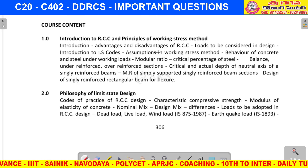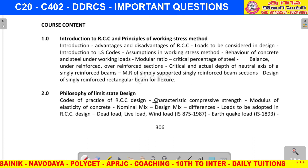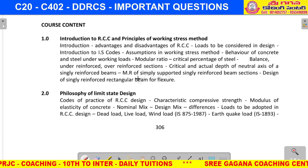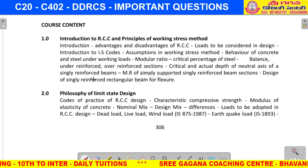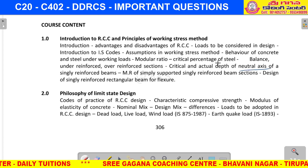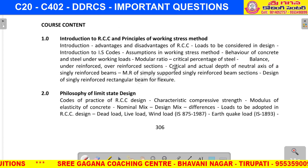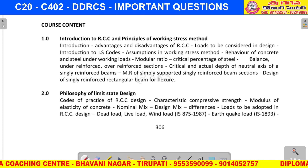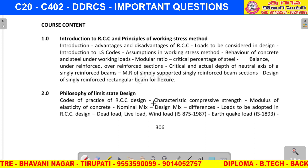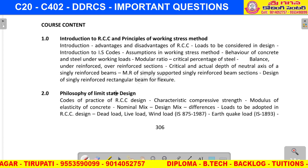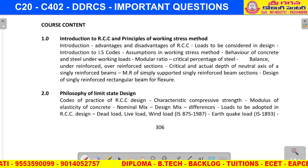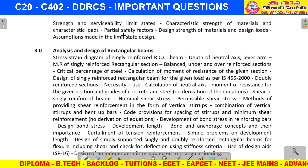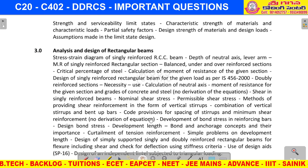For the first unit, choose 2 short answer questions — topics include advantages of RCC, modular ratio, moment of resistance, critical neutral axis, actual depth of neutral axis, and different types of concrete sections: balanced, under-reinforced, and over-reinforced sections. For the second unit: different design methods — working stress method, limit state method, ultimate load method, nominal mix, design mix, limit state of serviceability, and limit state of collapse.